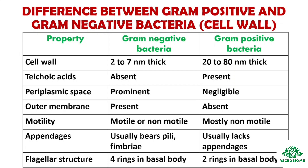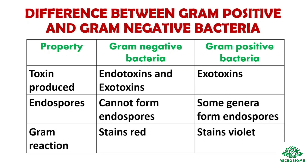Regarding motility: gram-negative bacteria can be motile or non-motile, while gram-positive bacteria are mostly non-motile. For appendages: gram-negative bacteria usually have pili and fimbriae, while gram-positive bacteria usually lack appendages. For flagella structure: gram-negative bacteria have 4 rings in the basal body, gram-positive bacteria have 2 rings. For toxins produced: gram-negative bacteria produce both endotoxins and exotoxins, while gram-positive bacteria produce only exotoxins.